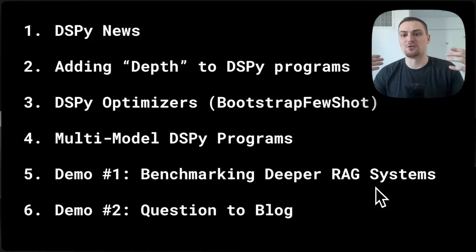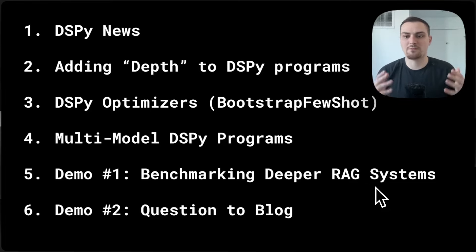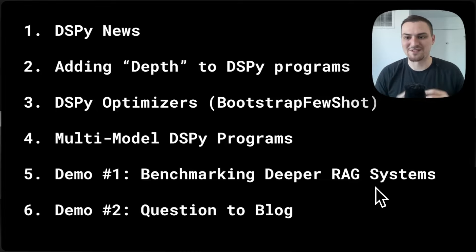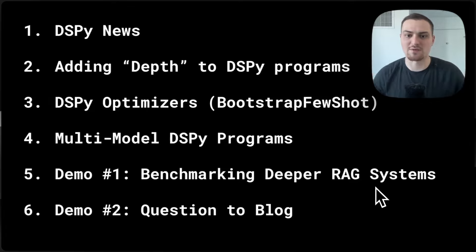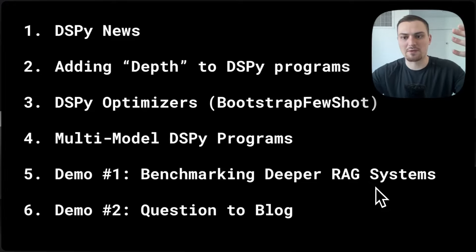You bootstrap input-output examples — few-shot examples, in-context learning — by running the most powerful model you can find through the program. That's where you get the examples from. We'll dive deep into how that works, look at the code, and see how you interface individual examples with higher-level optimizers, starting with the simple case of random search.